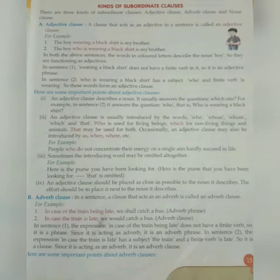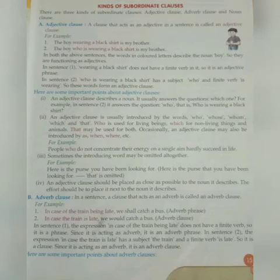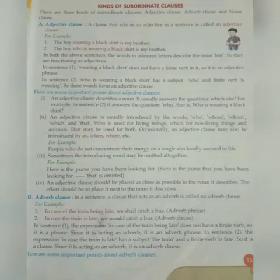There are three kinds of subordinate clauses: adjective clause, adverb clause, and noun clause. An adjective clause is a clause that acts as an adjective in a sentence. For example: 'The boy wearing a black shirt is my brother' versus 'The boy who is wearing a black shirt is my brother.' In both sentences, the highlighted words describe the noun 'boy', so they function as adjectives.